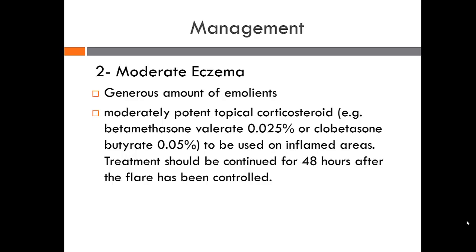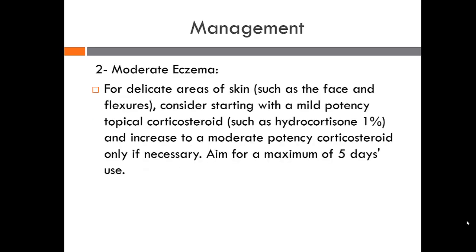For moderate eczema, generous emollients remain the mainstay. If that is not sufficient, use a moderately potent topical corticosteroid such as betamethasone valerate 0.025% or clobetasone butyrate 0.05% on inflamed areas, again continued for 48 hours after the flare is controlled. For delicate areas such as the face and flexures, start with a mild potency corticosteroid like hydrocortisone 1% and increase to moderate potency only if necessary, aiming for a maximum of five days use.